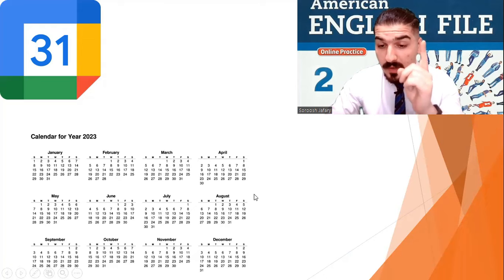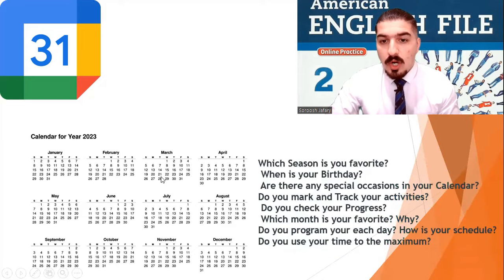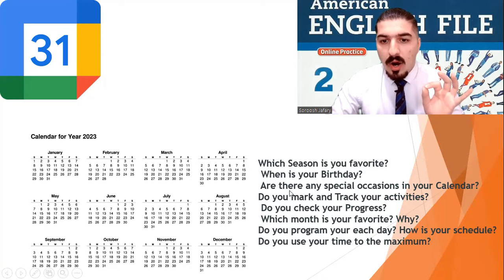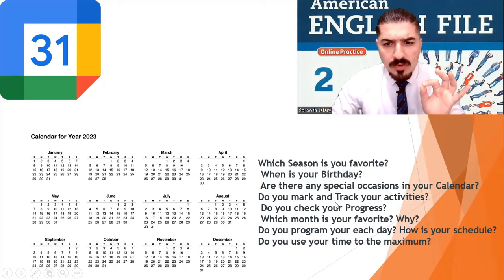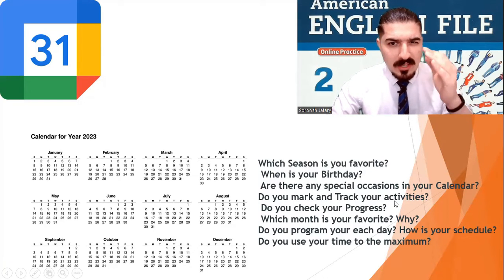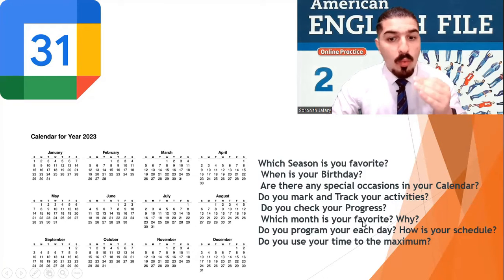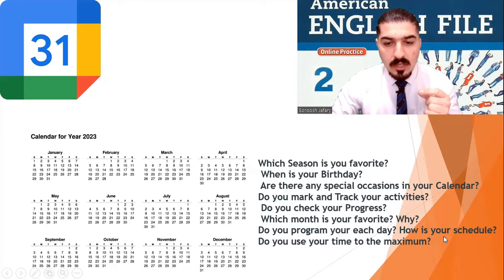I have some questions for you, very important. Which season is your favorite? We have four seasons, right? Spring, summer, fall, winter. When is your birthday? Are there any special occasions in your calendar? Do you mark and track your activities, the things that you do in a day? Do you check your progress? Which month is your favorite? Why? Do you program your each day? How is your schedule?